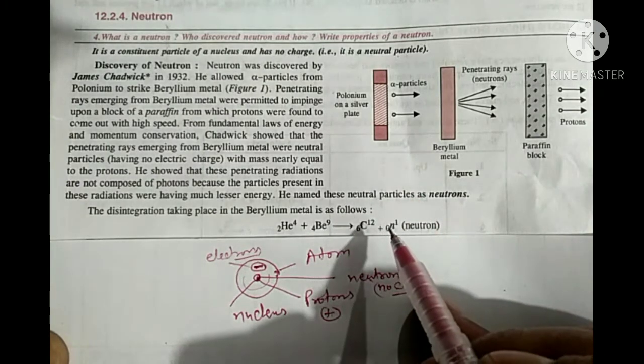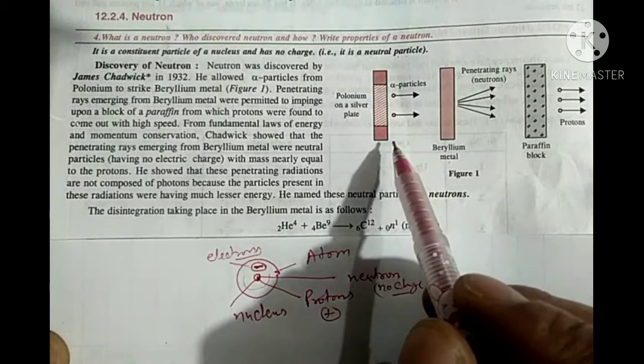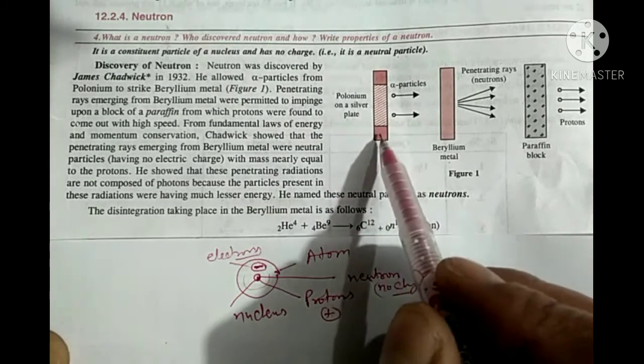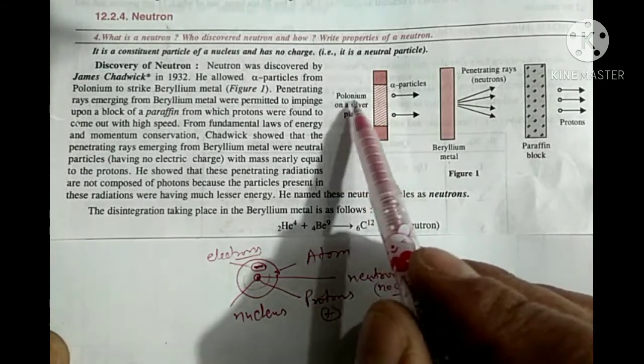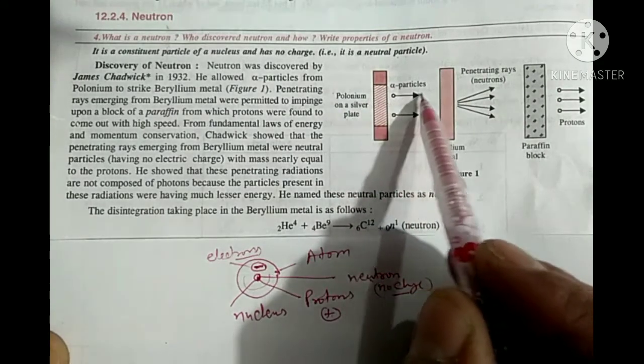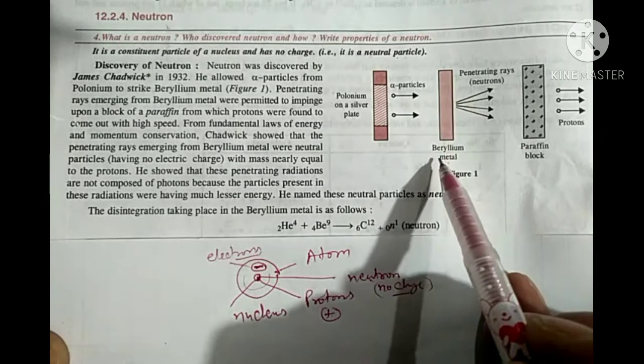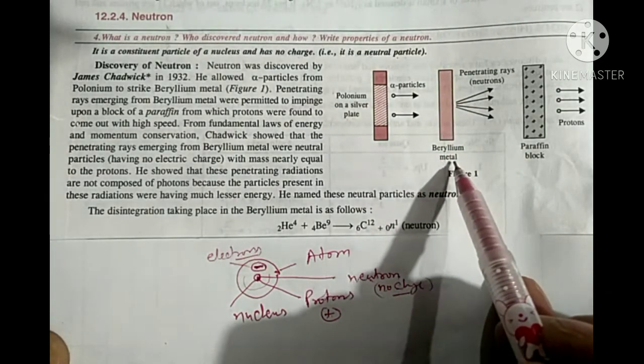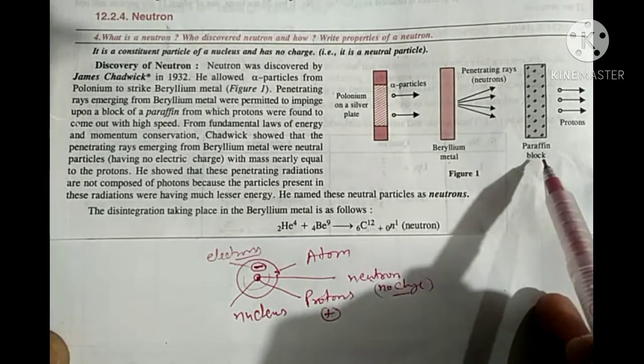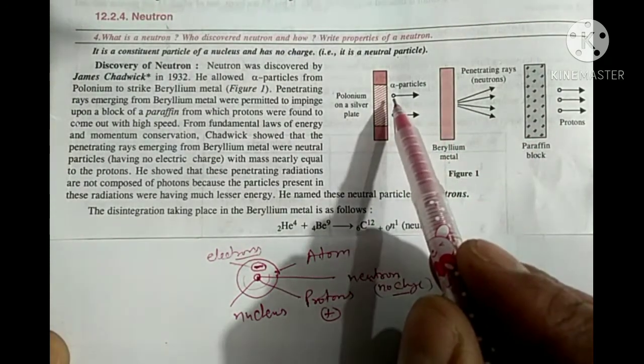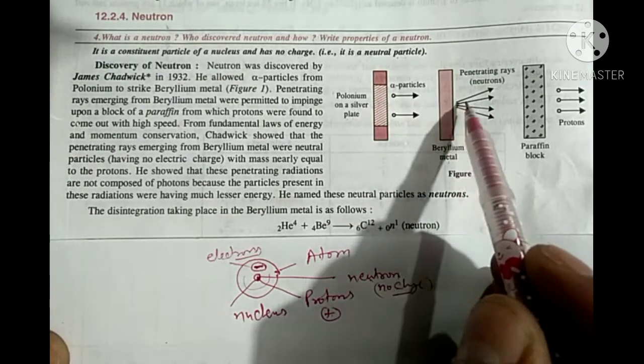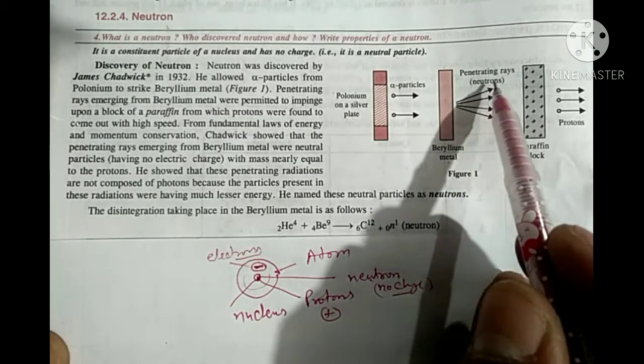He had an experimental set-up for the discovery of neutron. He placed a polonium plate, and from polonium alpha particles were emitted. Parallel to this he placed a beryllium metal, and then ahead a paraffin block. He allowed alpha particles from polonium to strike the beryllium metal, and penetrating rays, that is neutrons, were emerging.